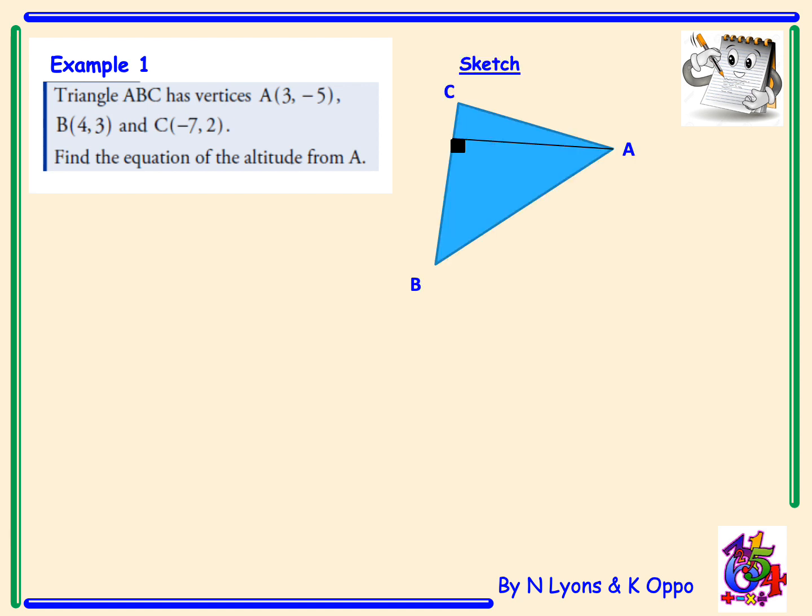First we are going to start with a sketch. So we can see that the altitude is coming from the vertex A and hitting the side BC at a 90 degree angle.